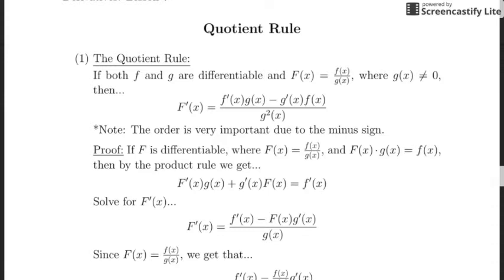So if f and g are both differentiable — so individually we can take the derivative of them — then what happens when you've got this capital F function that's the quotient of those two? We have to be specific: g cannot equal zero, because anytime g goes to zero, the whole function becomes undefined.